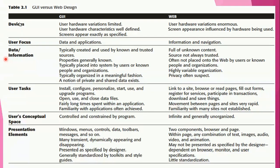Next is data or information. GUI data is typically created and used by known and trusted sources — people in the user's organization or reputable companies. The properties of the system's data are generally known. In contrast, the web consists of fully unknown content placed there by others who are unknown to the users.